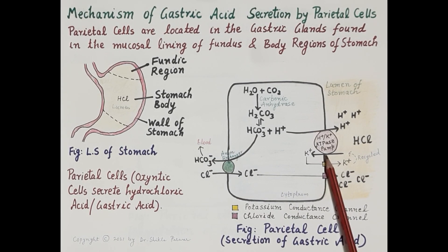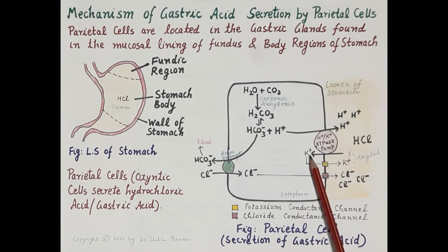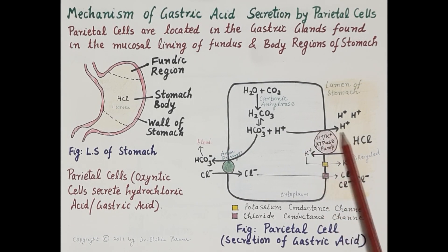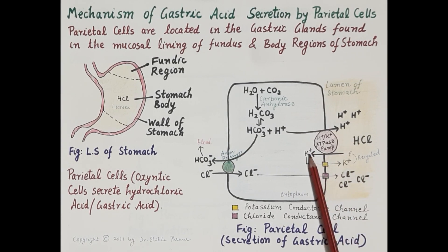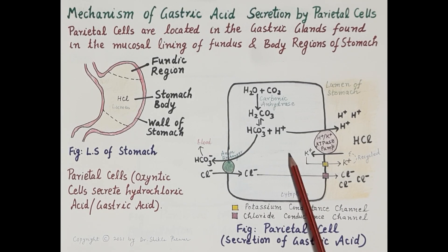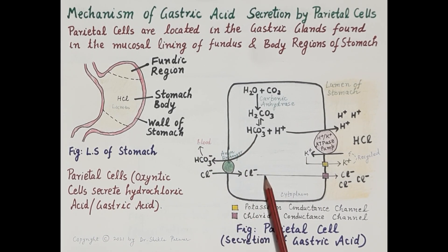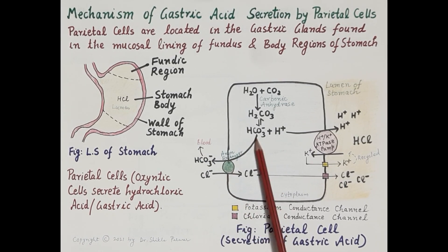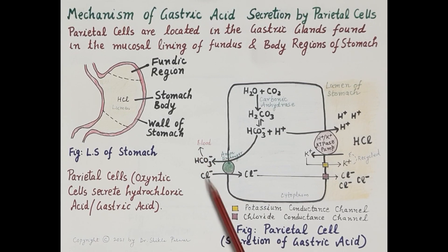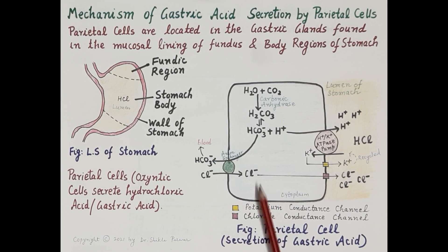The hydrogen ion is transported out of the parietal cells by the hydrogen-potassium ATPase pump, in exchange for potassium ions — hydrogen ions move outside the parietal cells while potassium ions move into the cytoplasm. On the other hand, bicarbonate ions are transported into the blood in exchange for chloride ions via the anion exchanger, so chloride ions are transported into the cytoplasm of the parietal cells.